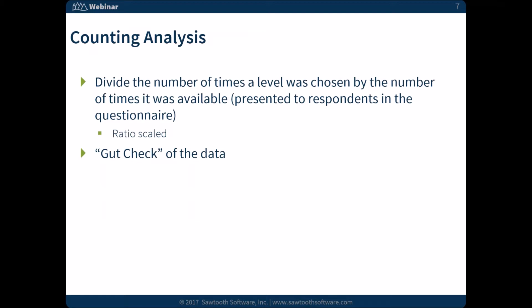Counting analysis is pretty much the most simple thing you can do with your data. You're basically counting up how often each of these levels were chosen across all your respondents, and then dividing it by the number of times it was available to be chosen. Since our design was nice and balanced, this counts analysis provides some meaningful data. These are ratio scale data, so we can say that something was chosen more or less often than something else. This serves as an initial step to get a feel for your data, do a gut check, and make sure nothing weird happened.